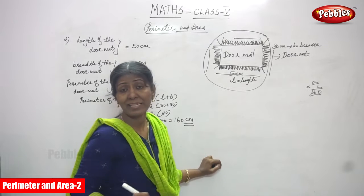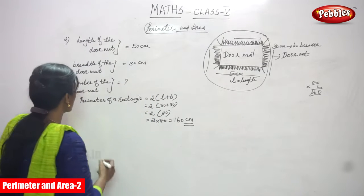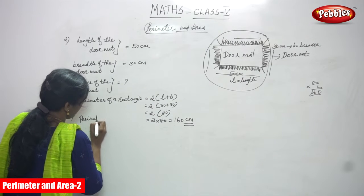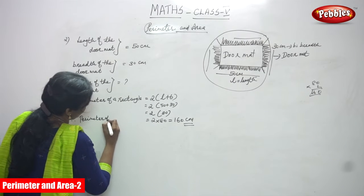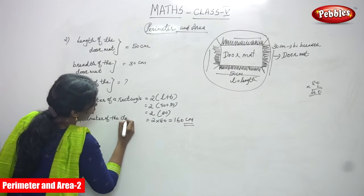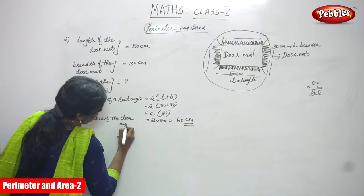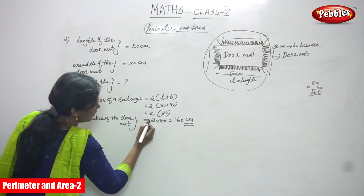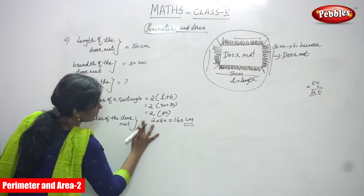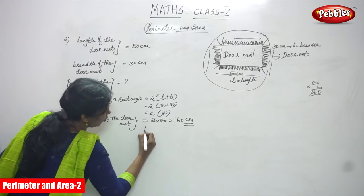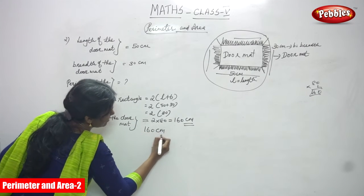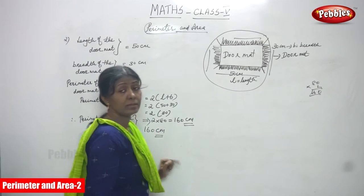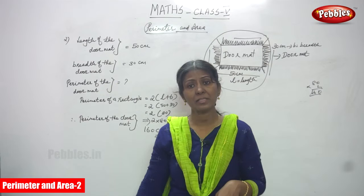This is the perimeter of the rectangle, or we can call it the perimeter of the doormat. Therefore, the perimeter of the doormat is equal to 160 cm. This is the correct answer for the question.